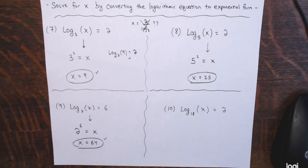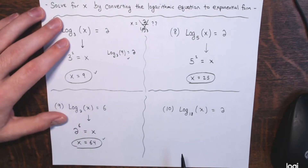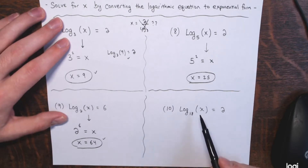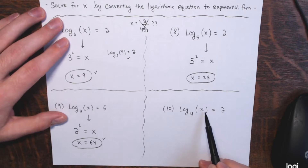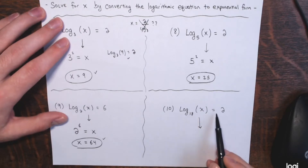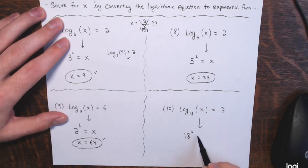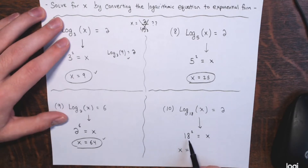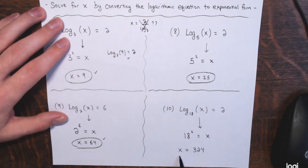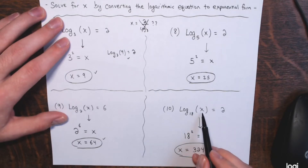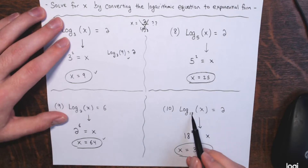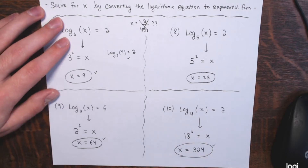And then my final example: the log base 18 of x equals 2. I want to find x — I need to change form to get it out of that log. This is equivalent to saying 18 to the second power, or 18 squared, equals x. So x equals 324. The log base 18 of 324 would indeed be 2, because 18 to the 2 power is 324. You go back and forth like that and that checks out.